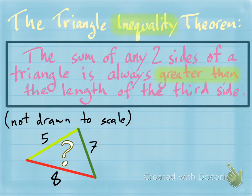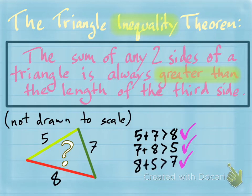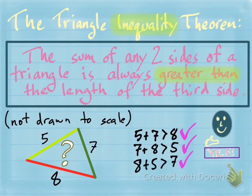It's really quite simple. All you have to do is pick any two sides, add them up, and see if the sum is greater than the third side. For example: five plus seven — is that greater than eight? Yes. Seven plus eight — is that greater than five? Yes, 13 is greater than five. And eight plus five — is that greater than seven? Yes. It's true for all three, therefore this triangle can exist.